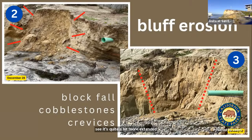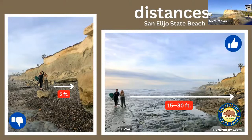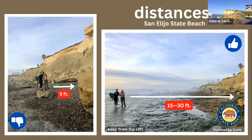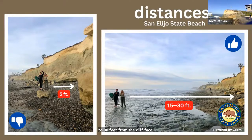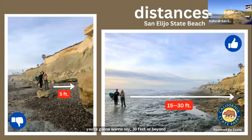I have a little safety message for everybody. In our picture to the left, you can see our friend Makar standing around five feet away from the cliff, and that's just not safe. You want to stand at least 15 to 30 feet from the cliff face. And if you're at a place where the cliffs are taller — maybe over three or four school buses high — you're going to want to stay 30 feet or beyond from the cliff. That will keep you safe while you play at the beach or any campground with a cliff.